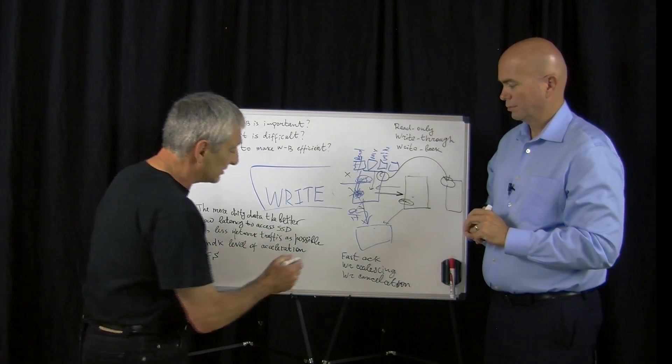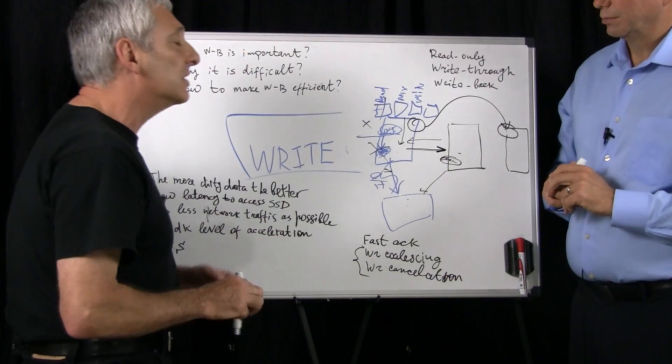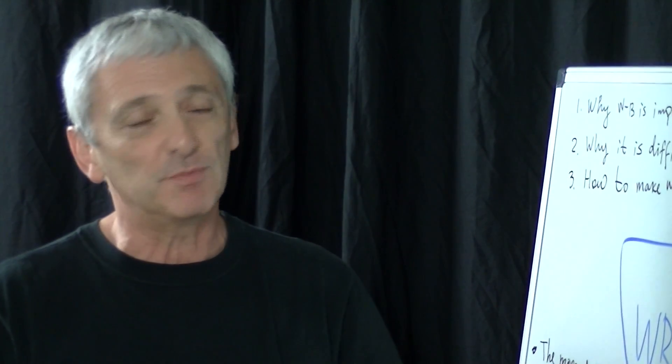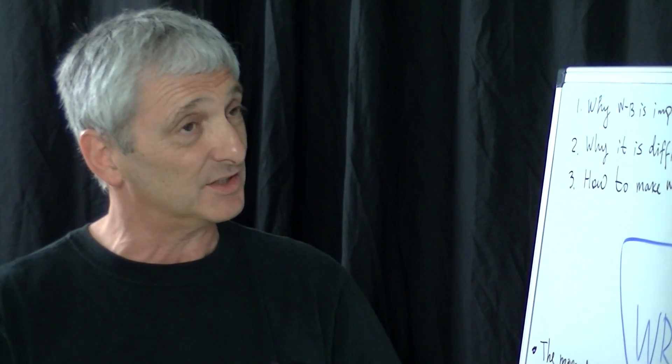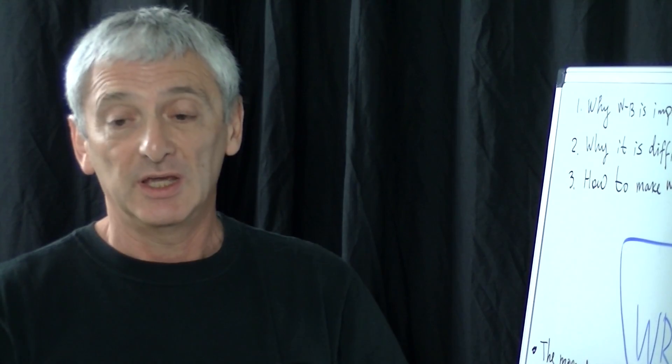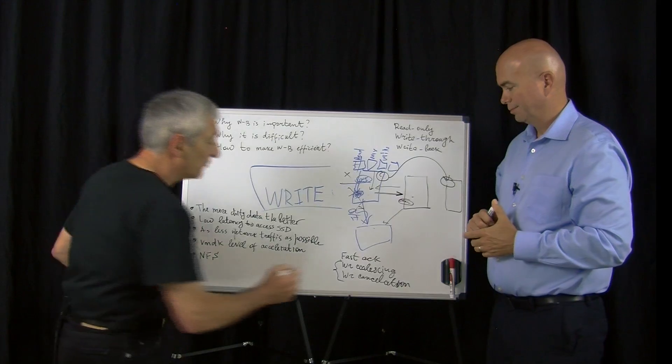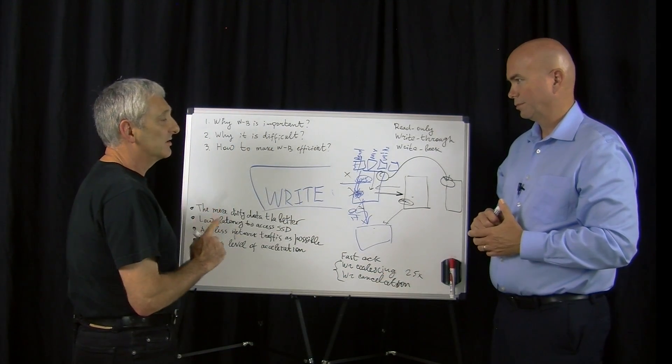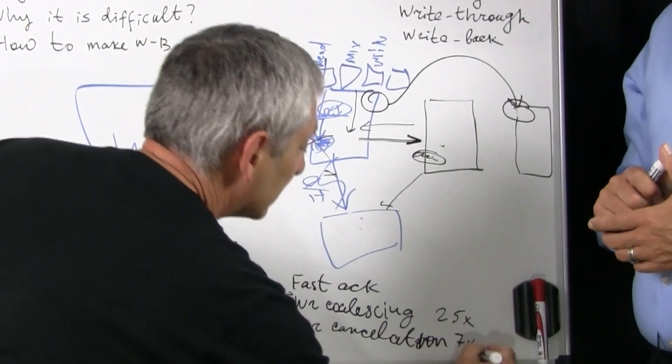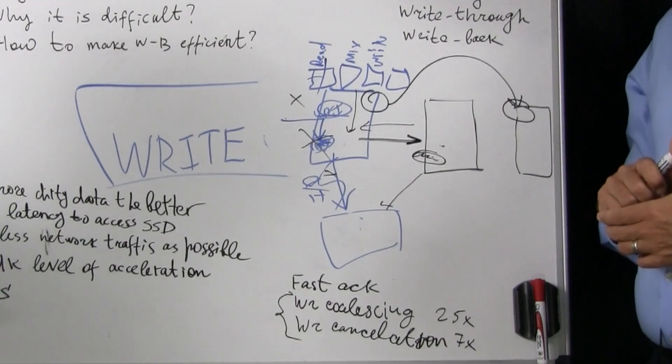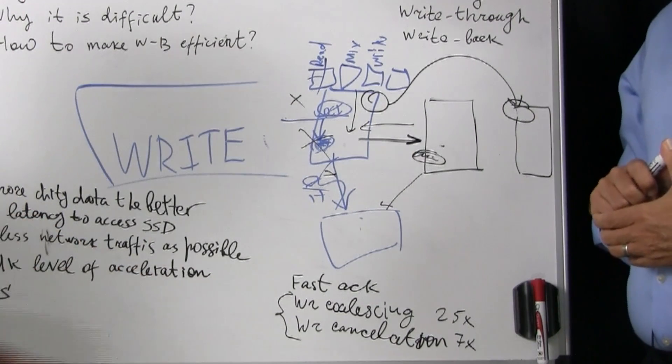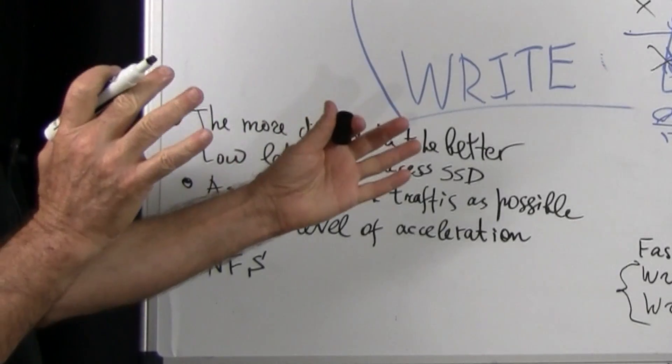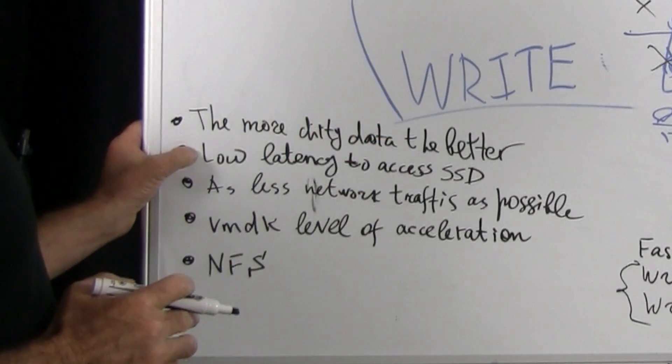Which is important, and this too is absolutely important for performance. So we're already two years shipping write-back cache for bare metal systems, Windows and Linux, and we have information from our enterprise customers. For example, we can see 25 times less IOs and seven times less data written on primary storage because of that. It means that the more dirty unflushed data we keep, the better.